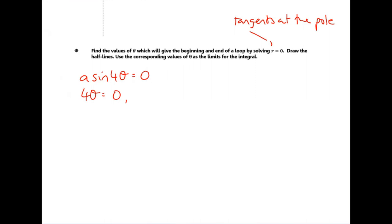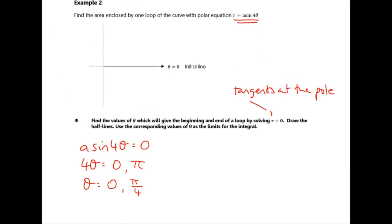We're going for the first loop. Sine is zero at pi, so in radians that's four theta equals pi, giving theta equals pi over four. So my first two tangents at the pole are zero and pi over four. The line theta equals zero is the initial line, and theta equals pi over four is here. So my initial loop goes like this - these are the tangents to the curve that go through the origin. We've tracked this curve out, got to the maximum value at A, and those tangents are our limits for integration.